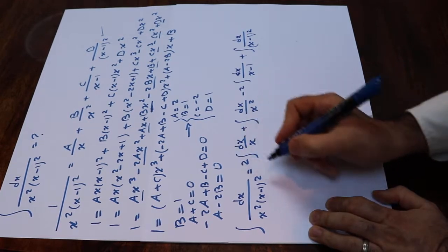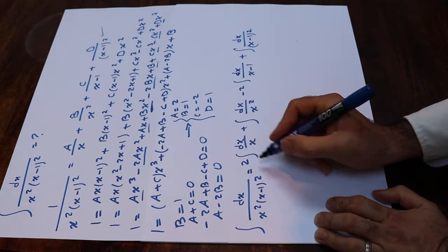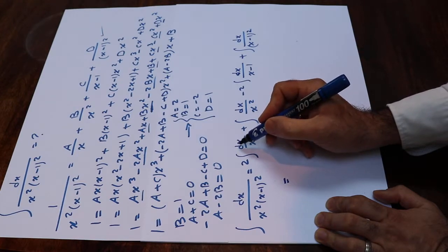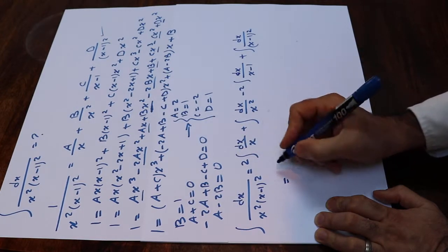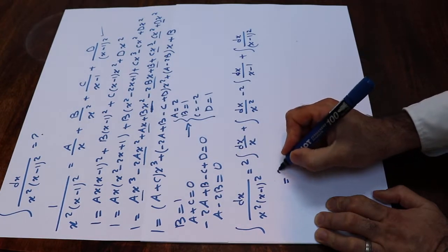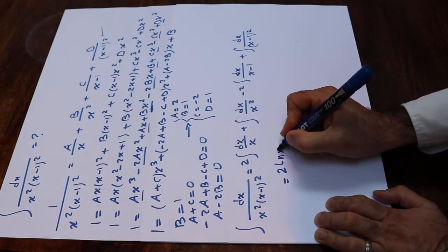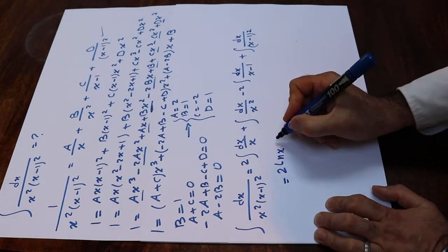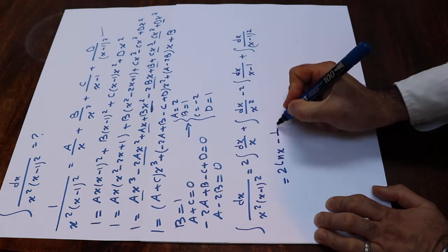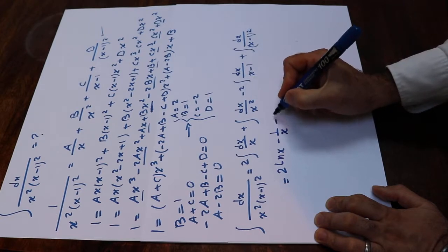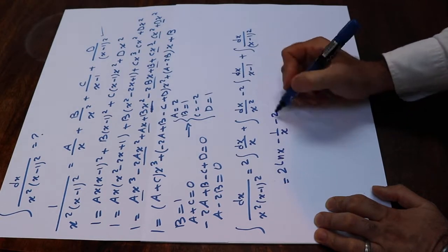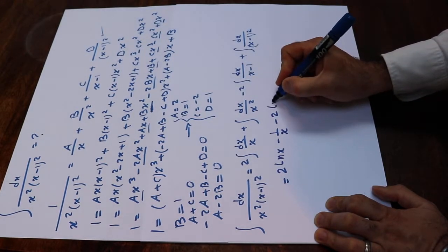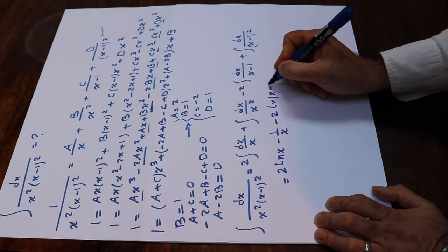The integral of dx divided by x is ln|x|, so that term gives 2 ln|x|. The integral of dx over x² equals minus 1 over x. The integral of dx over (x minus 1) is ln|x minus 1|, so that term gives minus 2 ln|x minus 1|.